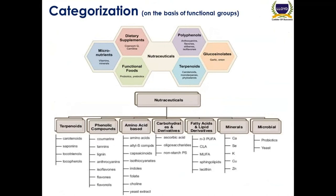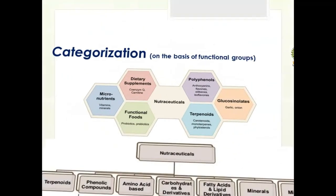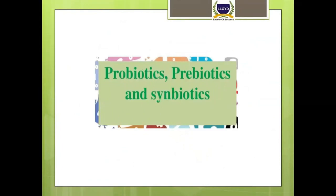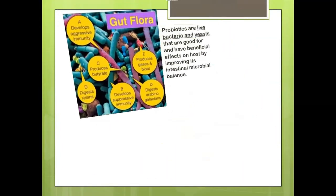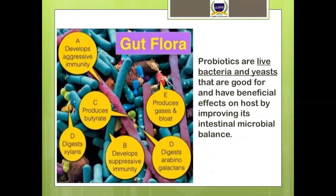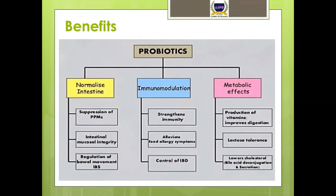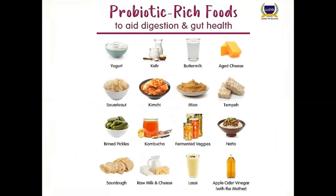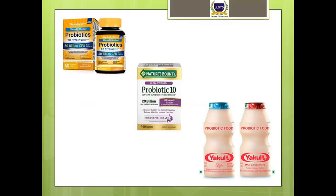Another classification of nutraceuticals is based on functional groups like terpenoids, phenolic compounds, amino acids, carbohydrates, minerals, and microbials. Probiotics are live bacteria and yeast that are good for intestinal health — good bacteria like those found in yogurt. Probiotics act as immunomodulators, improve gastrointestinal health, and have beneficial effects on metabolic processes. There are also marketed probiotic products such as Yakult that we are familiar with.